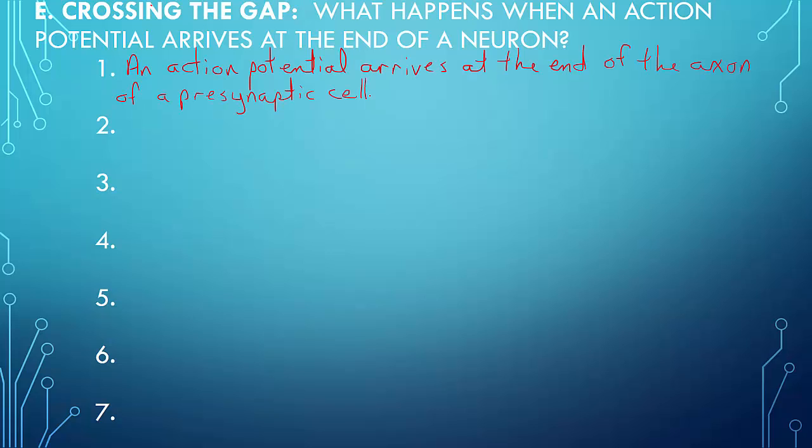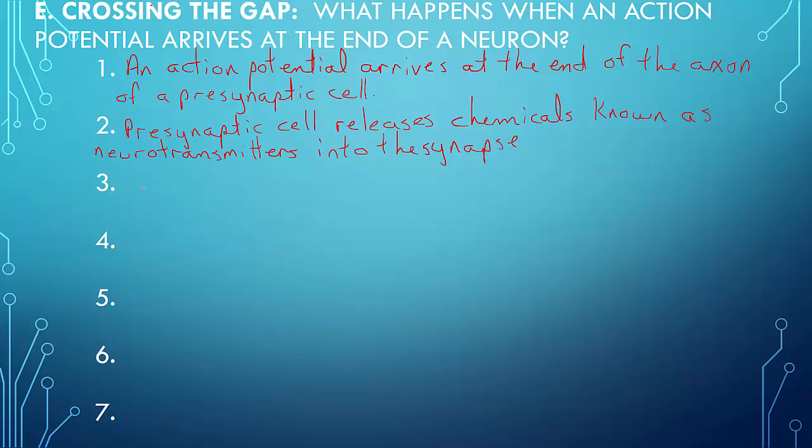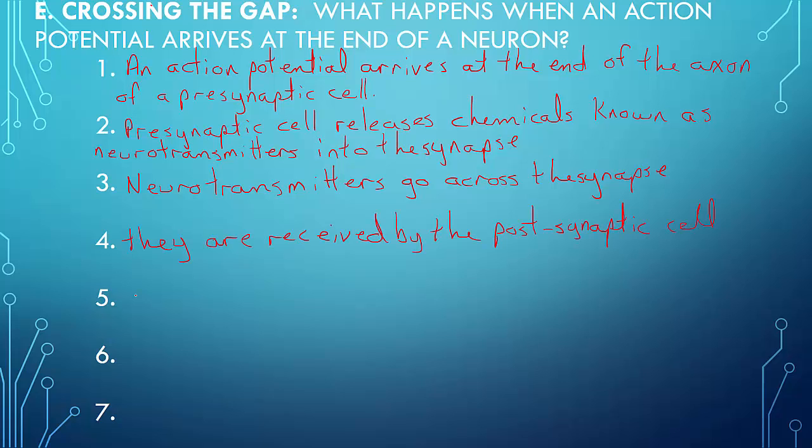The presynaptic cell releases chemicals known as neurotransmitters into the synapse. The neurotransmitters go across the synapse. They are then received by the postsynaptic cell. The neurotransmitters cause an action potential in the postsynaptic cell.